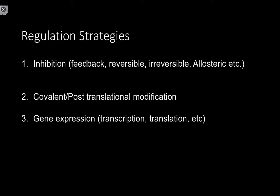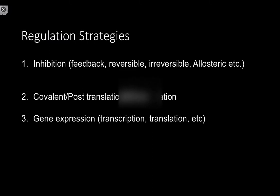For more fine-tuning type of methodologies, we have reversible inhibition. For shutting off an enzyme completely, we have irreversible inhibition. And then lastly, allosteric inhibition, which affects the KM and modifies the shape of that sigmoidal curve.